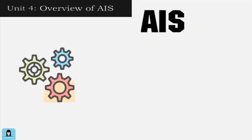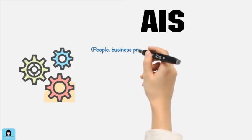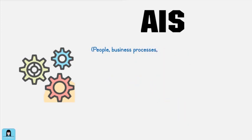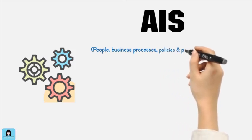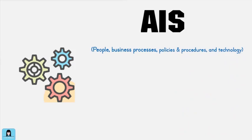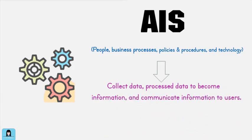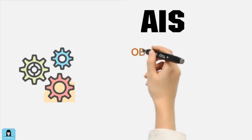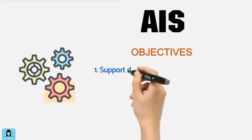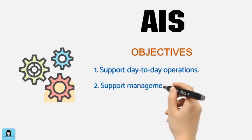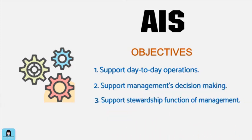The accounting information system (AIS) is a system that uses a set of formal procedures made up of people who perform tasks, the business processes taking place in the organization, the adopted policies and procedures, and employed technology. This set of formal procedures works together to collect data, process it to become information, and distribute the information to users. The objectives of the AIS are to support the business organization's day-to-day operations, management's decision-making, and its stewardship function.